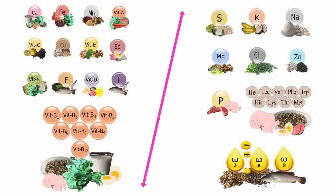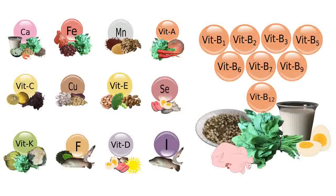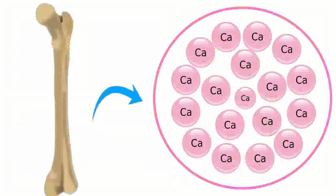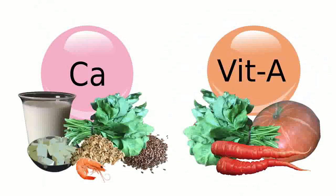Let's understand the difference between type 1 and type 2 nutrients. Type 1 nutrients are required for specific functions in the tissues. Therefore, they are concentrated in a particular tissue or group of tissues. Let's take calcium and vitamin A as examples.